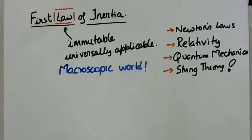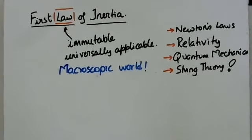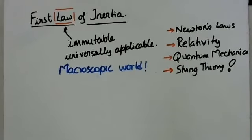Albert Einstein's theory of general relativity explains quite a lot of things, but there are still gaps in certain areas. For example, gravity has been viewed completely differently by Albert Einstein, and that concept does not fit in with certain other observations that have happened in nature since. We are talking about things like black holes and so on.